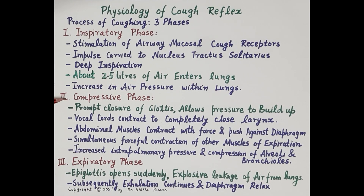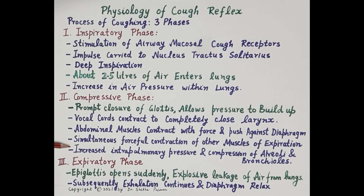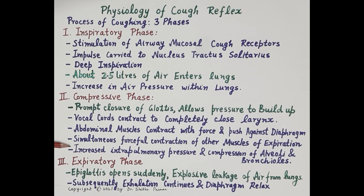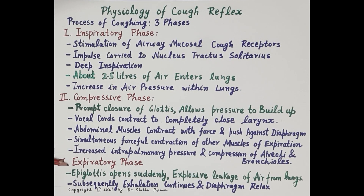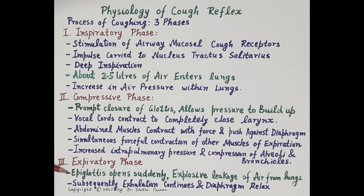There is a rapid closure of the glottis, further increasing pressure. The vocal cords contract and completely close the larynx. The abdominal muscles contract forcefully, pushing against the diaphragm, with simultaneous forceful contraction of other expiratory muscles. The pressure within the lungs — intrapulmonary pressure — rises so high that it causes compression of the alveoli and bronchi. The third phase is the expiratory phase.